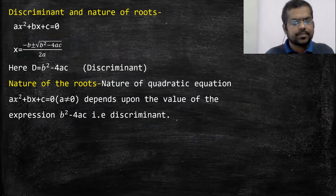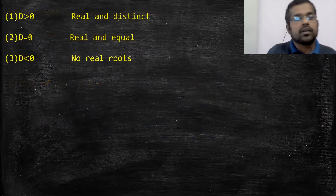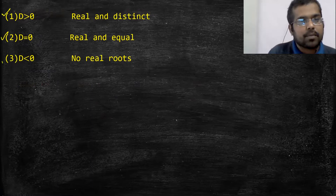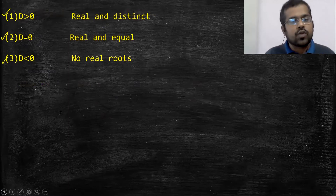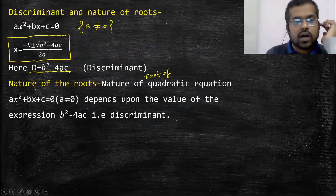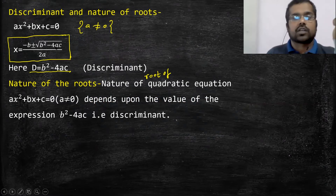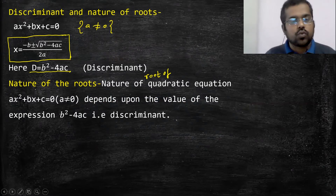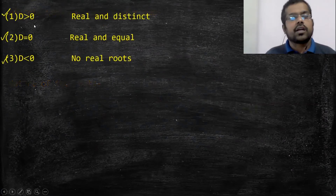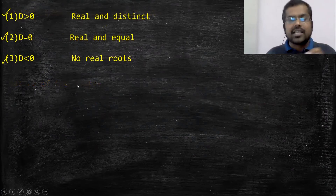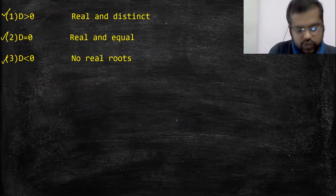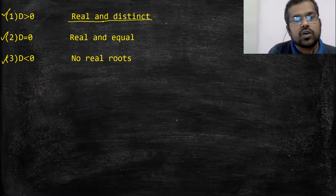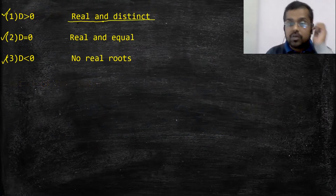D की value देखो — root के अंदर b² - 4ac क्या हो सकता है? Positive हो सकता है, negative हो सकता है, 0 हो सकता है — यही तीन possibility होगी। तो वही चीज़ हमको यहाँ discuss करना है: अगर d > 0 होगा, d = 0 होगा, और d < 0 होगा।